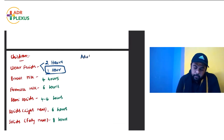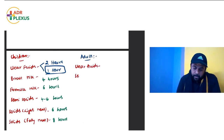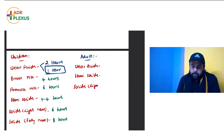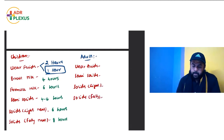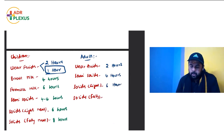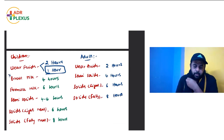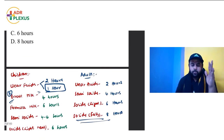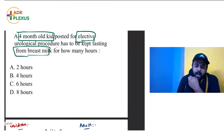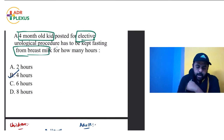In adults: clear fluids is 2 hours, semi-solids is 4 hours, light solids is 6 hours, and fatty solids is 8 hours. This is very, very important. Questions are predominantly asked about formula milk, clear fluids, and solids with a heavy fatty meal after 8 hours. In this question about breast milk for an elective procedure, the answer is 4 hours.